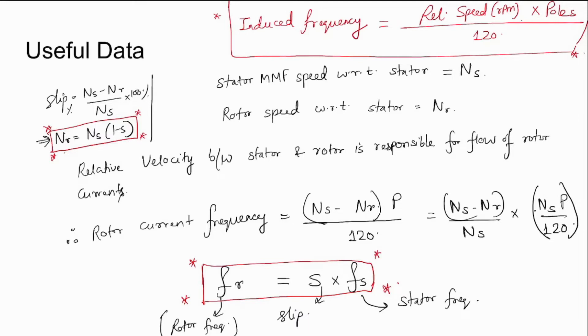Then the induced frequency in the rotor will be equal to (Ns minus Nr) times number of poles divided by 120. This can be modified by plugging in Ns here and we get slip times the stator frequency, which is the rotor frequency induced.